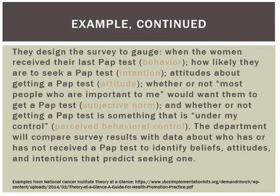To collect this information, they design a survey. The survey gauges when the women received their last pap test — their existing behavior pattern; how likely they are to seek a pap test — indicating their intention; attitudes about getting a pap test — indicating their attitude; whether most people important to them would want them to get a pap test — indicating subjective norm; and whether getting a pap test is something under their behavioral control. The department will compare survey data about who has and has not received a pap test to identify beliefs, attitudes, and intentions that predict seeking one.